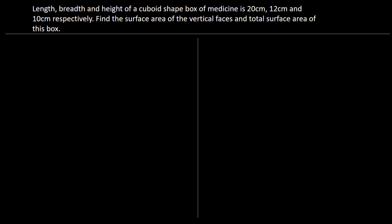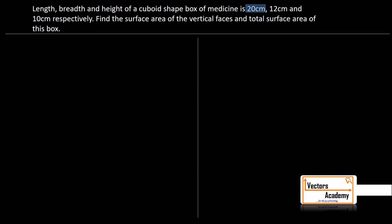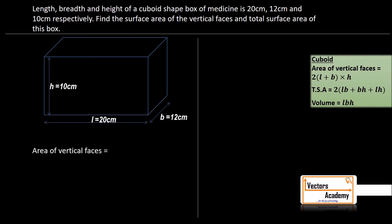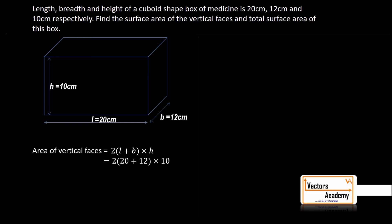The length, breadth and height of a cuboid-shaped box of medicine is 20 cm, 12 cm and 10 cm respectively. We have to find the surface area of the vertical faces and the total surface area. The area of the vertical faces is 2(L + B) × H. Substituting all the given values, the area of the vertical faces comes to 640 cm².